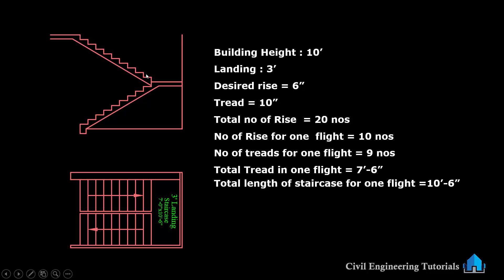Total number of trades in one flight is 9 numbers. Trades: 1, 2, 3, 4, 5, 6, 7, 8, 9. Rise is 10 numbers, and trade equals rise minus 1 — you can see 1, 2, 3, 4, 5, 6, 7, 8, 9: that is 9 numbers of trades in one flight.